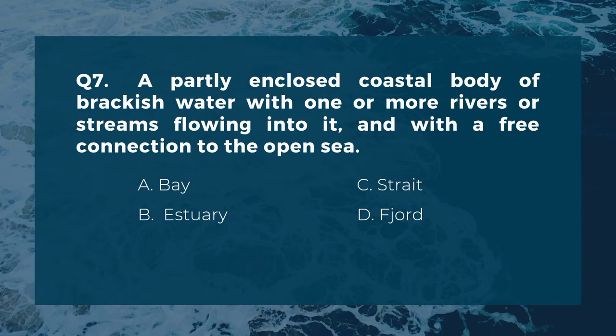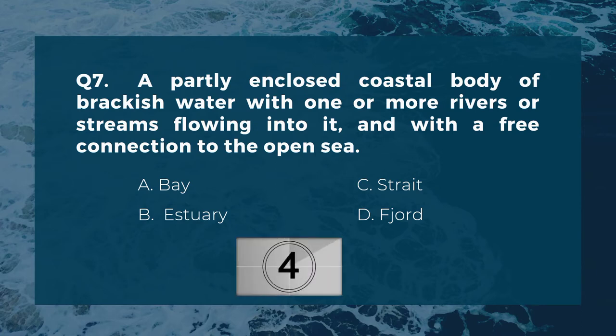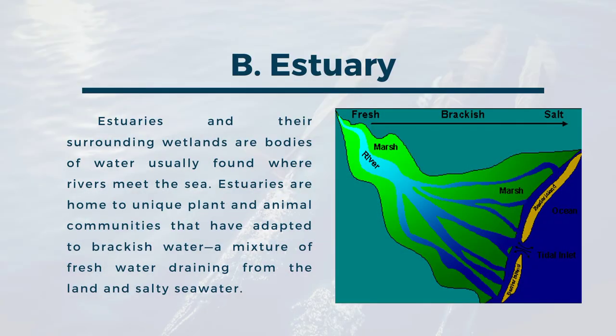Question seven: a partly enclosed coastal body of brackish water with one or more rivers or streams flowing into it and with a free connection to the open sea. A) bay, B) estuary, C) strait, D) fjord. The correct answer is B, estuary. Estuaries and their surrounding wetlands are bodies of water usually found where rivers meet the sea. Estuaries are home to unique plant and animal communities that have adapted to brackish water — a mixture of fresh water draining from the land and salty seawater.